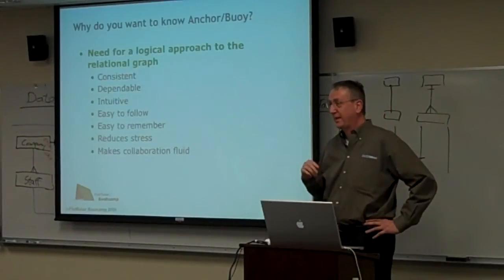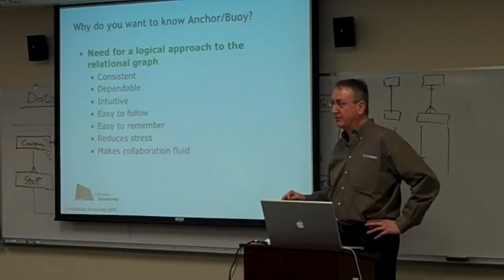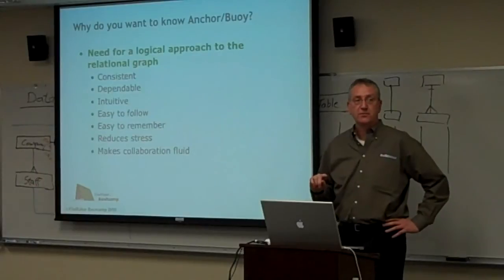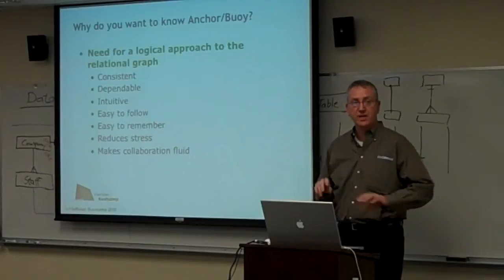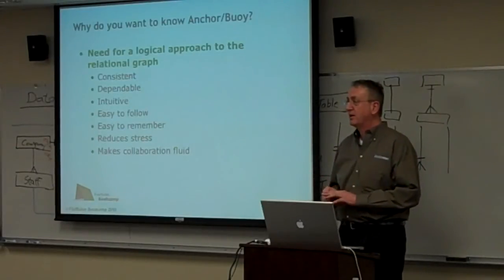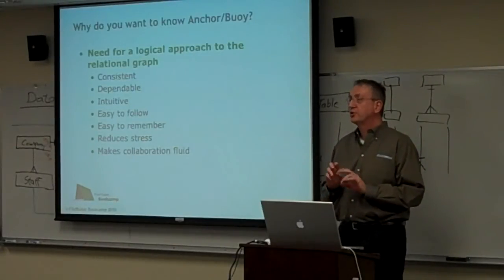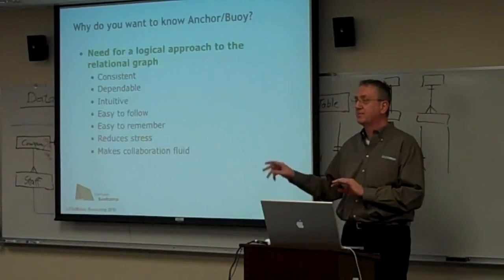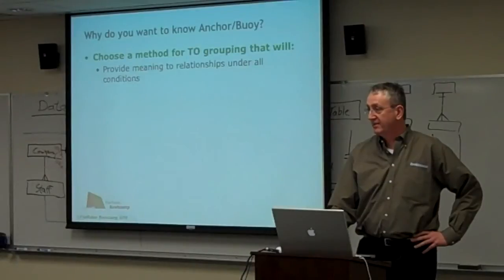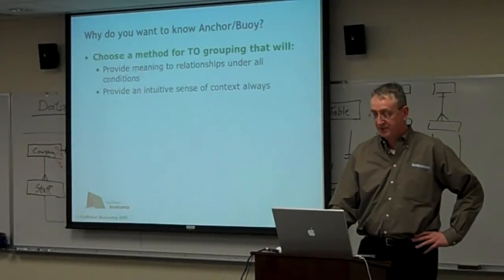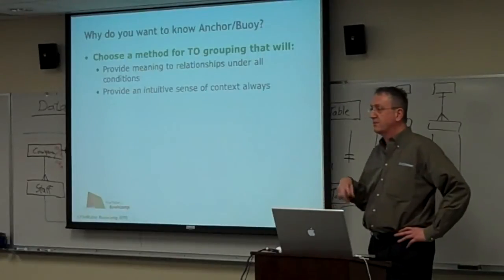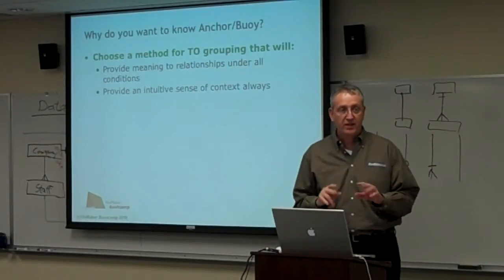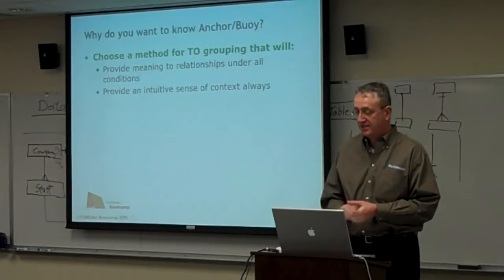I argue that with Anchor Buoy and the naming conventions covered in the second half of this session, you can get it down so concise that once the system is built and you're working in it regularly with your legend going, you can have it so memorized you never go into the graph to check what the relationships are. Whatever context you're in, you can start typing keys and field names from memory. Relevance and relationship become almost synonymous in Anchor Buoy. We want to provide an intuitive sense of context always — no matter what layout or dialog you're in — the context will always be consistent.